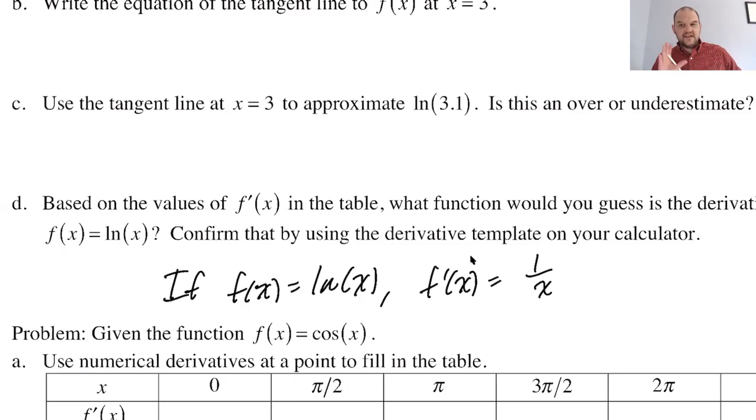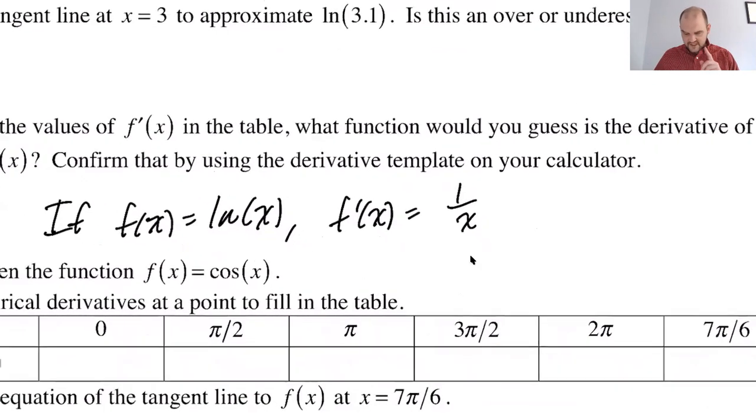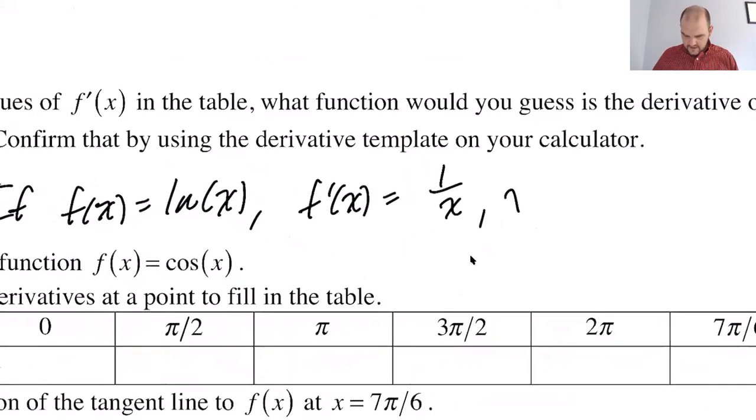What issues does this have? Well, the domain of the natural log of x is x greater than zero, right? You can't take the natural log of a negative. So if the domain of the original is x greater than zero, it doesn't make sense to have a slope at places the original function doesn't exist. So the domain of the derivative should also be x is greater than zero.